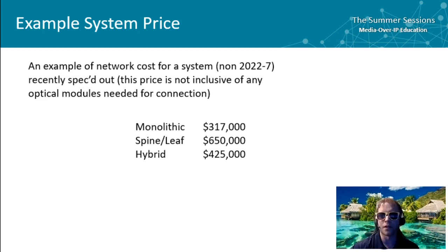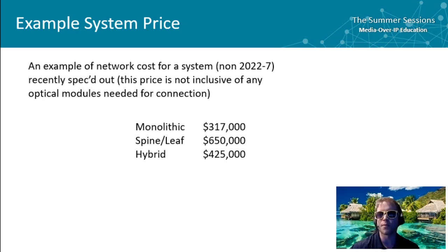Costing these systems out can be very difficult, and price comparisons are usually required. This is a comparison of a system I'm designing right now where three different architectures are being considered: monolithic, spine-leaf, and hybrid. The monolithic system is a single switch with multiple line cards, the spine-leaf system is a fixed switch system with multiple leaves, and the hybrid is a combination of both. As you can see, the prices are much higher for a spine-leaf architecture to get the same throughput, while the hybrid falls somewhere in between.